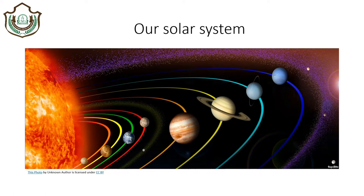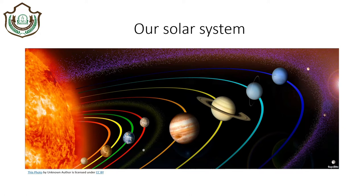Do you want to know a fun way to remember the names of the planets in the order of their increasing distance from the sun? You just need to learn: 'My Very Educated Mother Just Served Us Nuts.' If you learn this sentence, you will be able to tell the distance of the planets from the sun in their increasing order. The nearest planet to the sun is Mercury, and the farthest planet is Neptune.